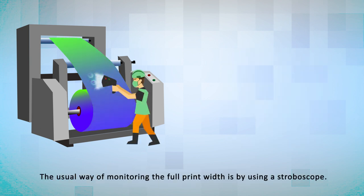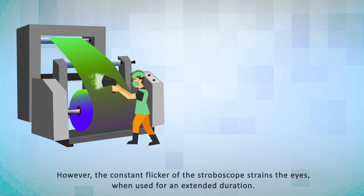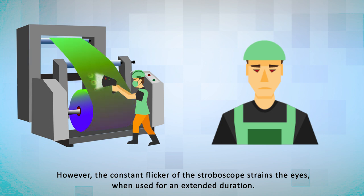The usual way of monitoring the full print width is by using a stroboscope. However, the constant flicker of the stroboscope strains the eyes when used for an extended duration.